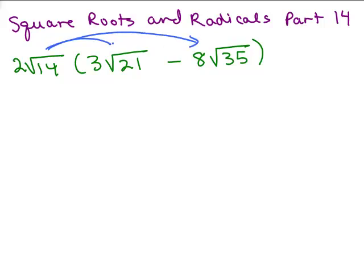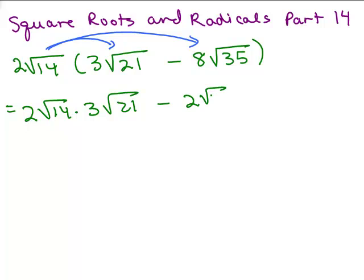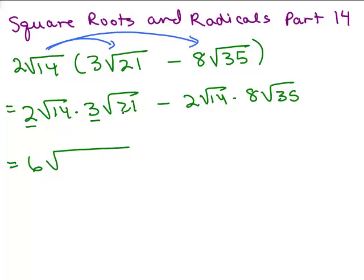We're going to do the multiplication using the distributive property. So I have 2 square roots of 14 times 3 square roots of 21, minus 2 square roots of 14 times 8 square roots of 35. For this first one, I've got 2 times 3 which is 6, but instead of doing 14 times 21, I'm going to look and see if they both happen to have a common factor — and they do.